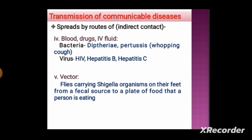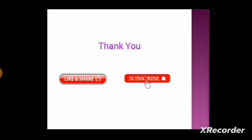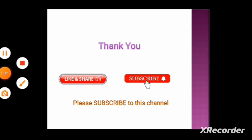Vectors can also transmit diseases through indirect contact. For example, flies carry Shigella organisms on their feet from a fecal source to food, and when a person eats the contaminated food they become infected with shigellosis. These are all the modes of transmission of communicable diseases. If you liked this video, please like, share, and subscribe to this channel.